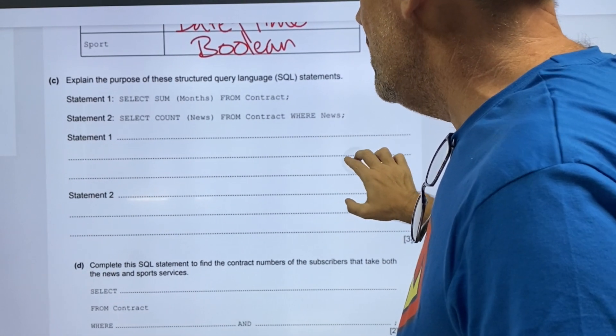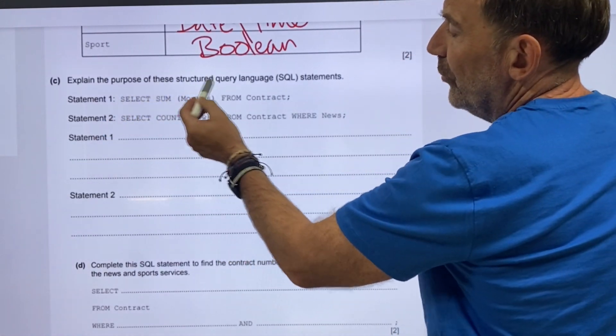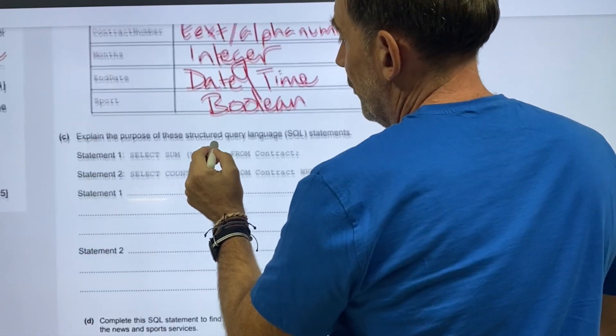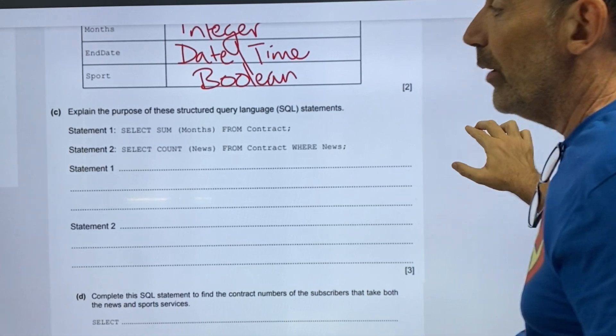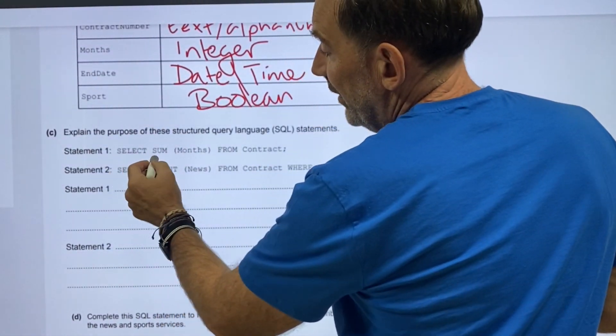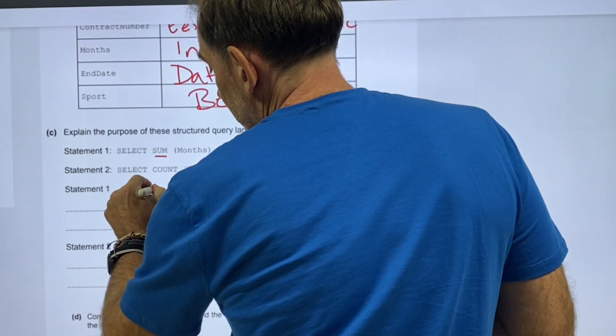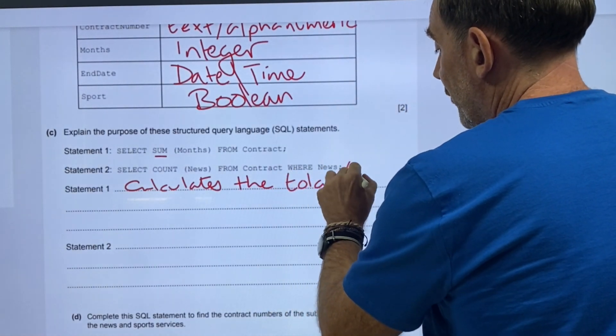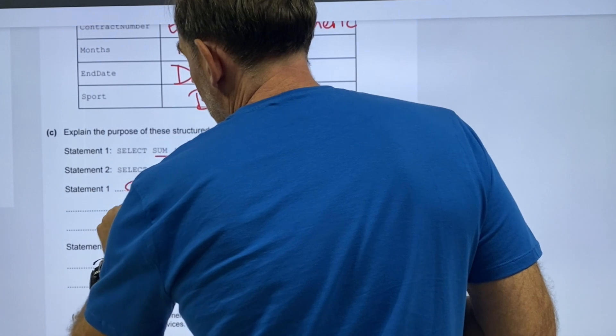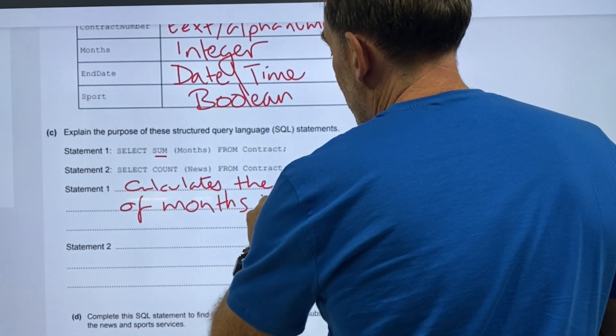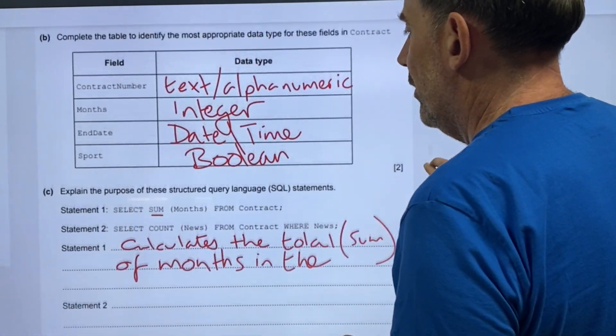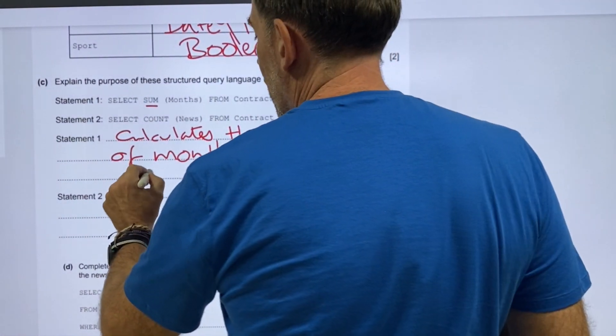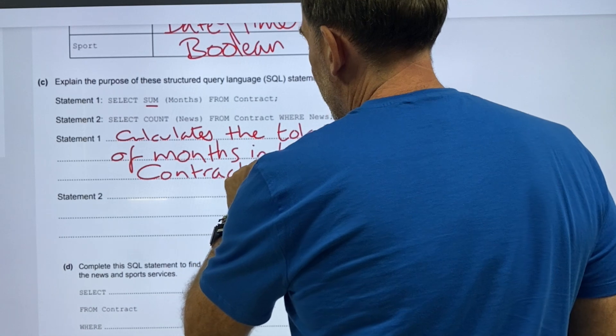Part C, explain the purpose of these structured query language statements. Select sum months from contract. What is that doing? Well, it's calculating, it calculates the total, and we're going back in sum, of months in the contract, in the contract thing.